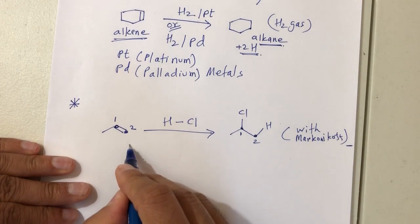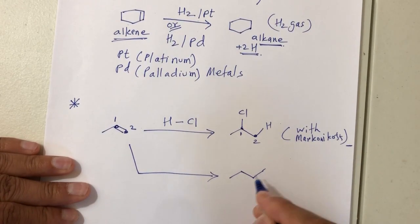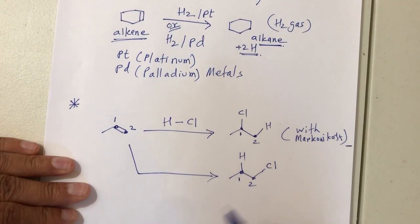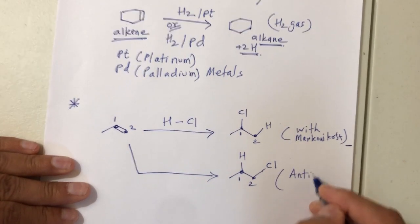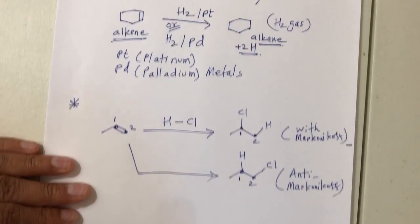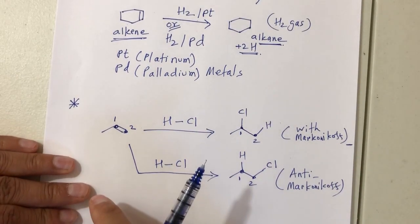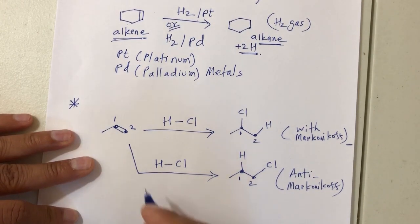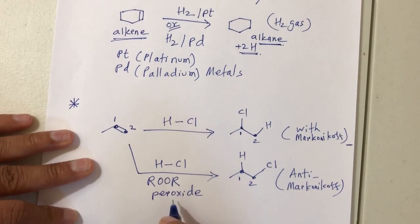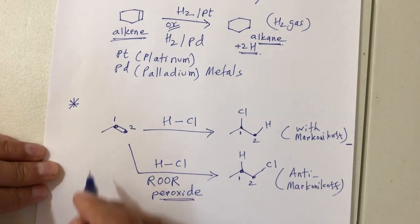But what if you want to switch the position of hydrogen and chlorine — putting Cl on carbon 2 and H on carbon 1? In that case you're going anti-Markovnikov's. You still add HCl, but you also need to add a peroxide. Anytime you see a peroxide, that means you're going anti-Markovnikov's.